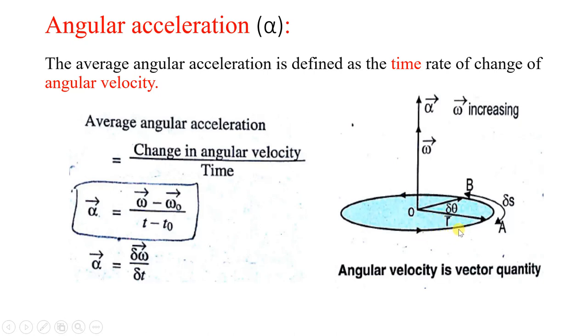In this case, suppose the particle is moving anti-clockwise from A to B. A to B is the angular displacement. So this omega indicates the direction of angular velocity, and angular acceleration both are same.